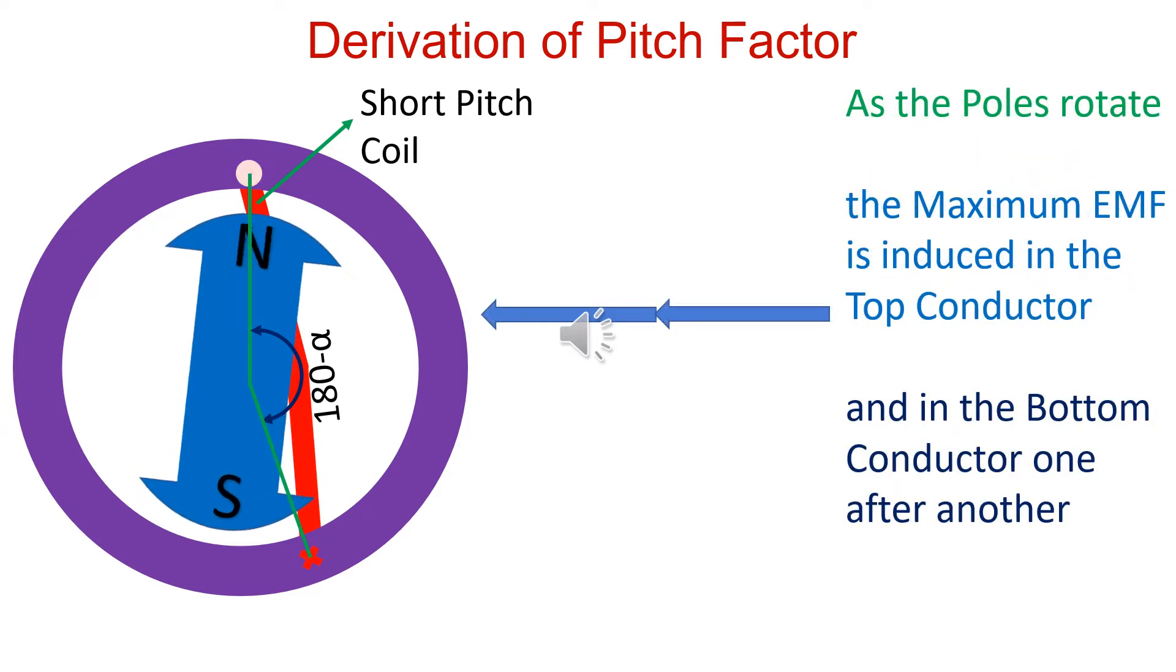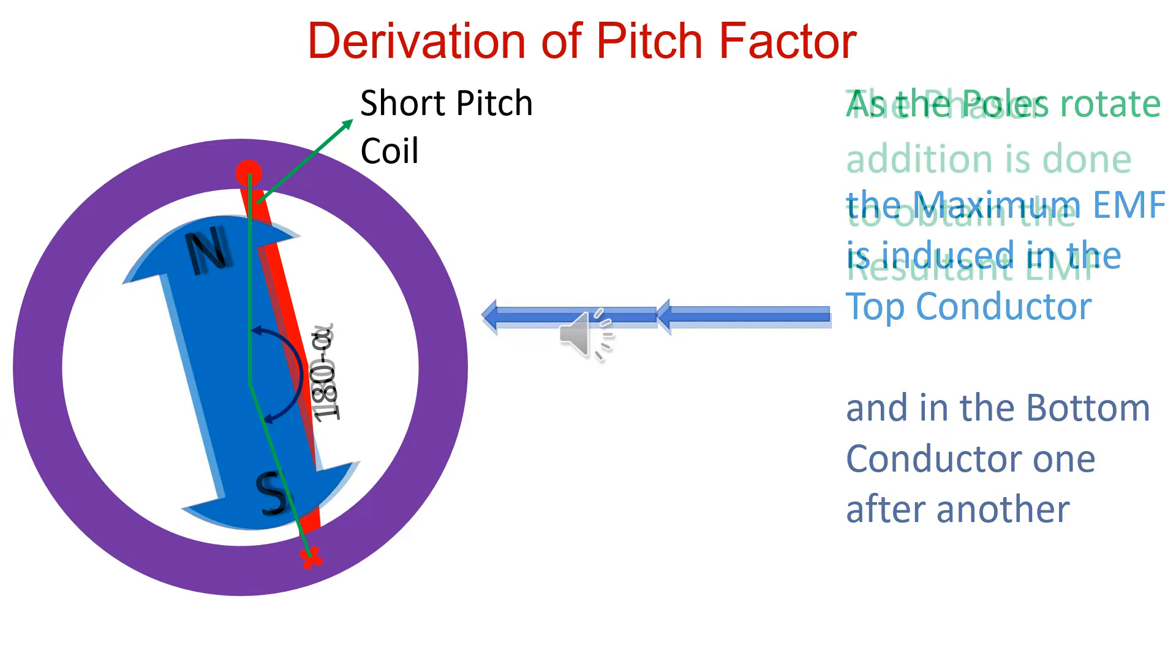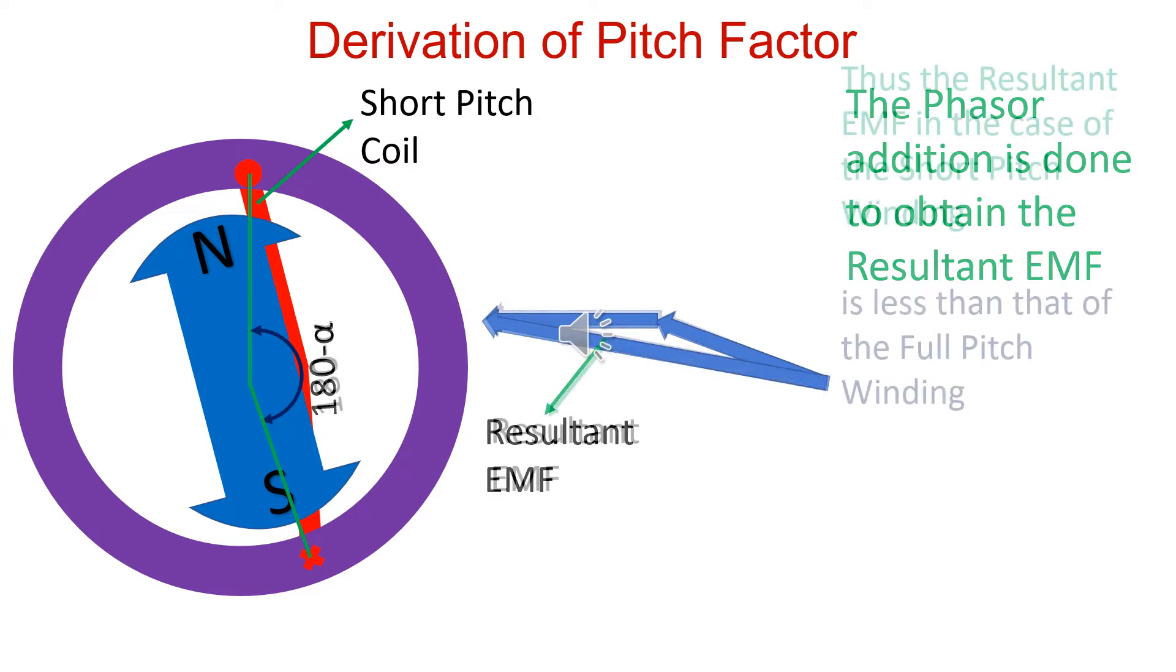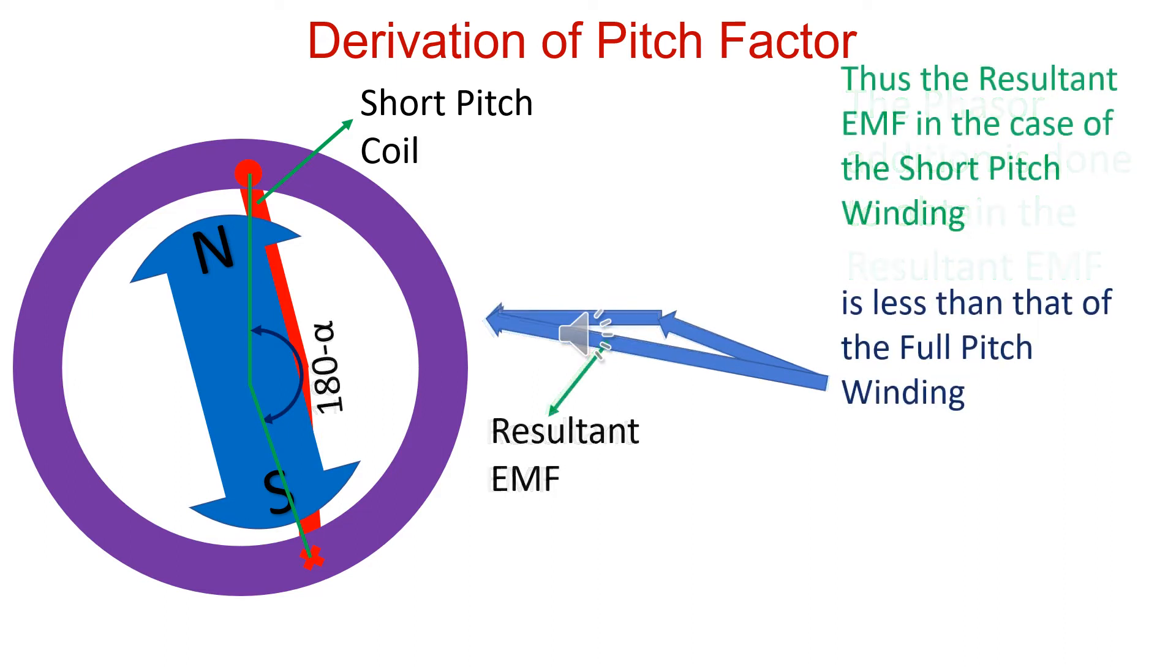EMF is induced in coil sides one after another. Resultant EMF is reduced by electrical angle alpha. Resultant EMF is found by phasor addition. Resultant EMF is reduced as compared to full pitch coils.